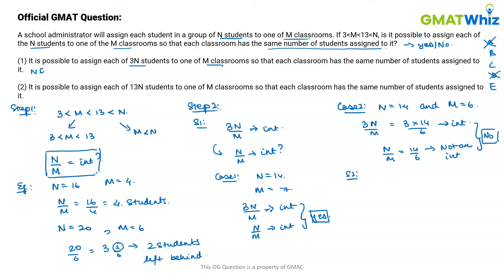Statement 2 tells us that it is possible to assign each of the 13n students to one of the m classrooms, meaning 13n over m is an integer. Notice that this means 13n over m is an integer, and keep in mind m must be less than 13. This means the value of n over m will definitely have to be an integer.